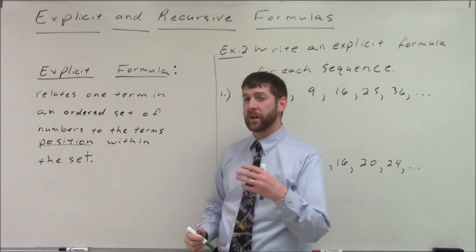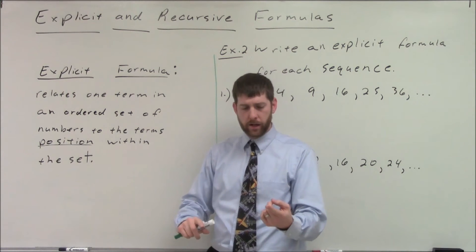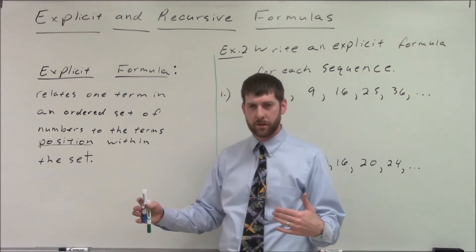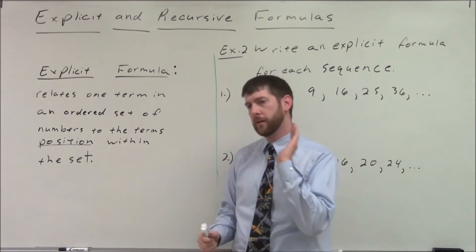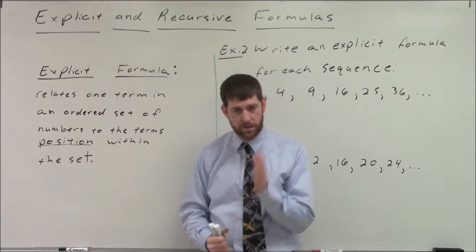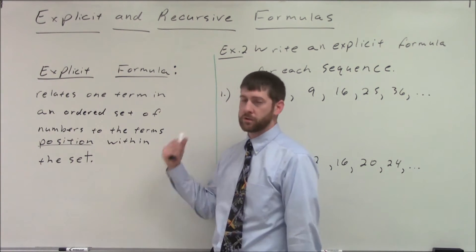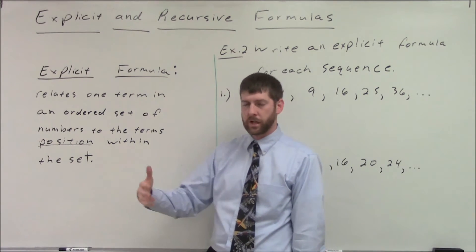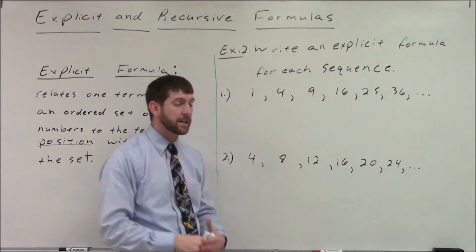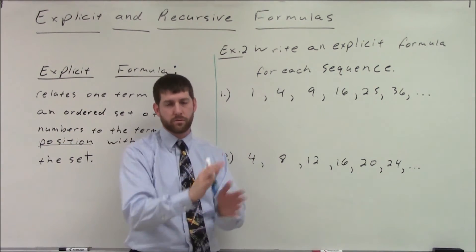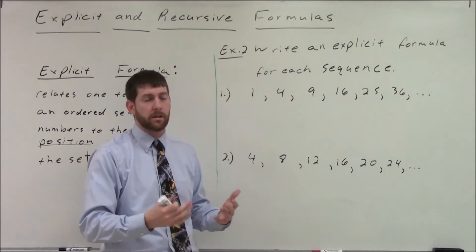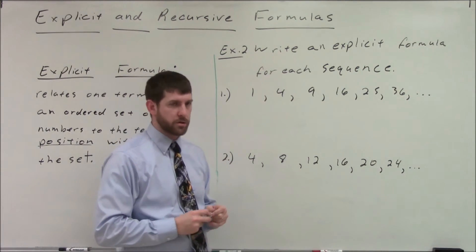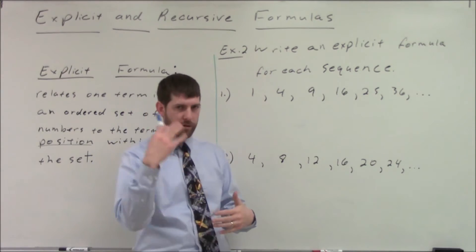Now let's talk about the explicit formula — it's very different from the recursive formula. The recursive formula tells us where to start and what to do to one term to get to the next. The explicit formula only needs to know the position within the sequence. If I know the position — say I'm looking for the 5th, 10th, or 15th number — I plug that one number into the formula and it spits out the actual value. So the explicit formula relates one term in the sequence to its position.